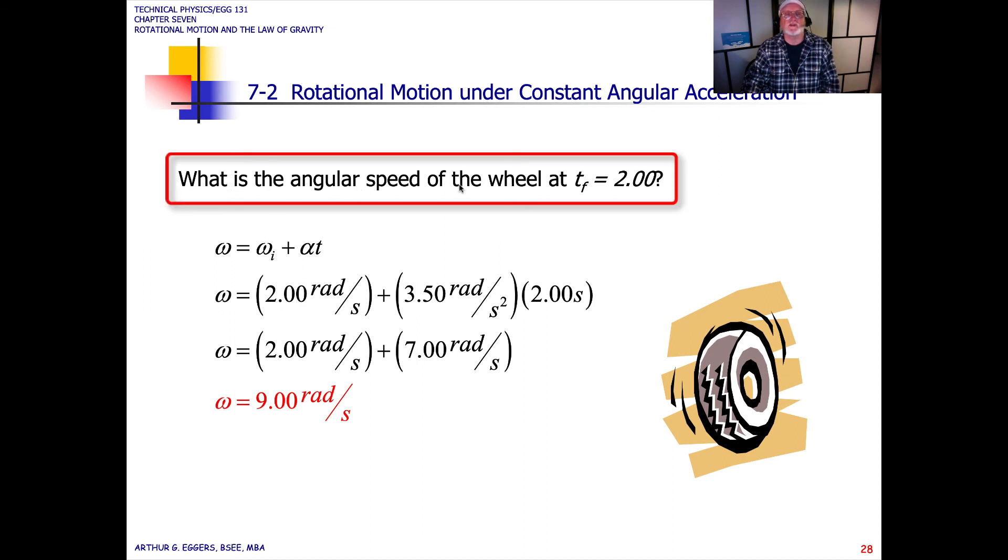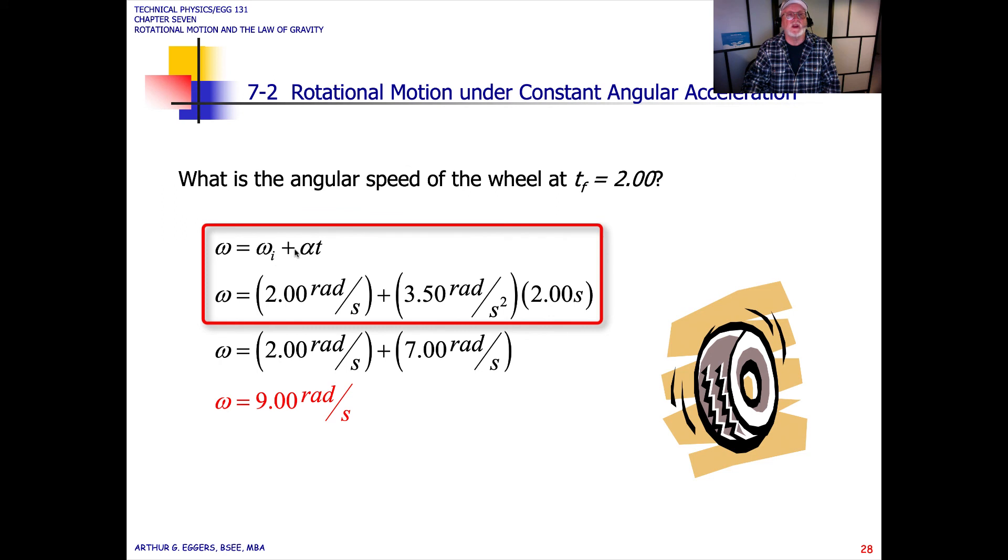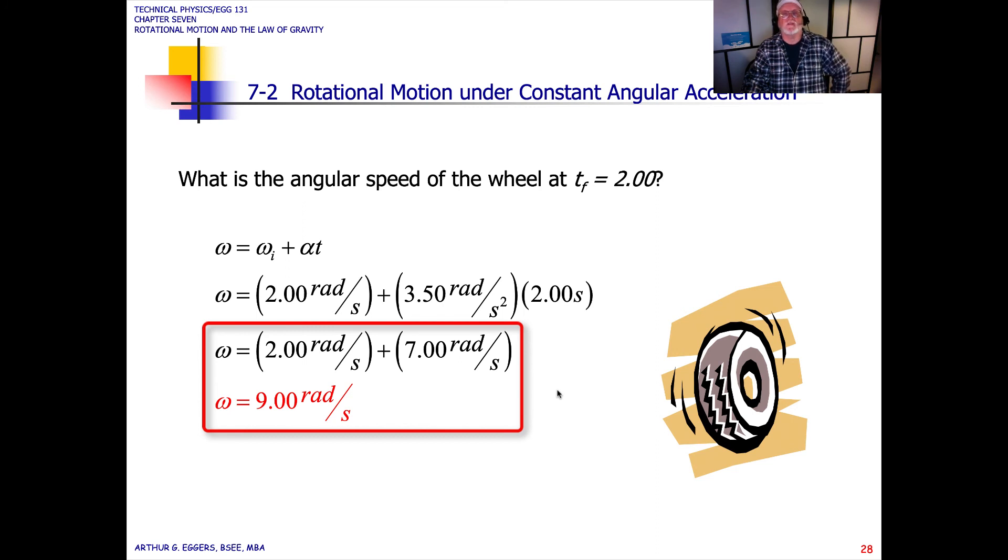What's the angular speed of the wheel at time final after two seconds? Omega final equals omega initial plus alpha t. So omega final equals 2 radians per second plus 3.5 radians per second squared times two seconds. Omega equals two plus seven, which gives us 9 radians per second as our angular velocity.